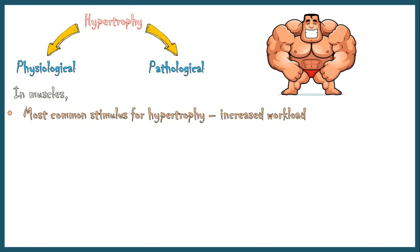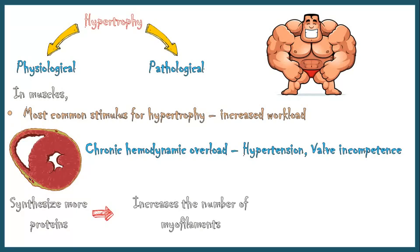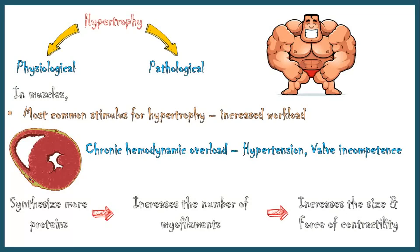In cardiac hypertrophy, it is due to chronic hemodynamic overload generated by long-standing hypertension or valve incompetence. In both occasions, the muscle cells synthesize more structural proteins, resulting in an increased number of myofilaments. Ultimately, the muscle size and force of contractility of the muscle increases.